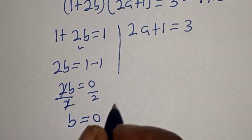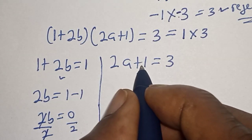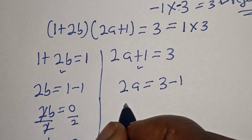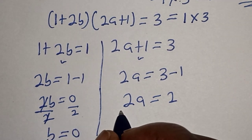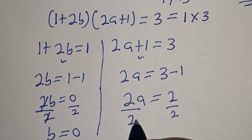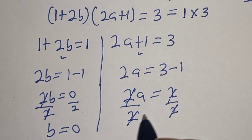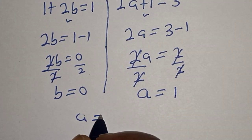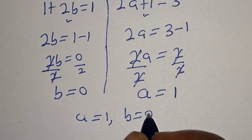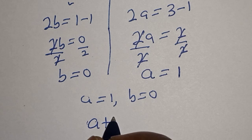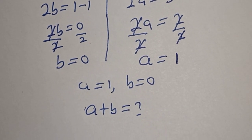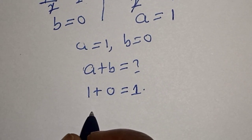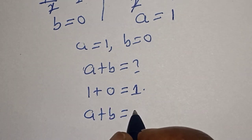From the first case: 1 plus 2b equals 1, so 2b equals 0, and dividing both sides by 2 gives b equals 0. From the second case: 2a plus 1 equals 3, so 2a equals 2, and dividing both sides by 2 gives a equals 1. Therefore a plus b equals 1 plus 0, which equals 1.